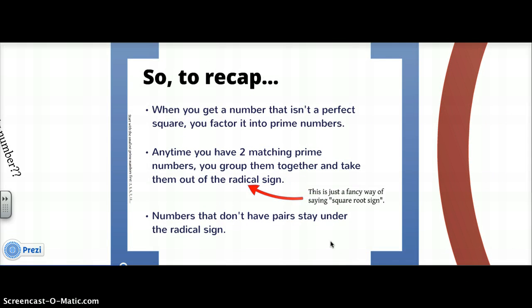Let's recap what he said. When you get a number that isn't a perfect square — not like 36, 49, or 25 — you factor it into prime numbers. Anytime you have two matching prime numbers, you group them together and take them out of the radical sign. The radical sign is just a fancy way of saying the square root. Numbers that don't have any pairs stay under the radical sign.